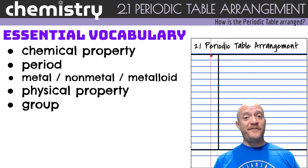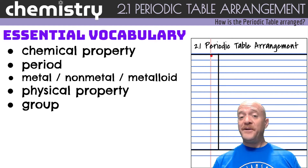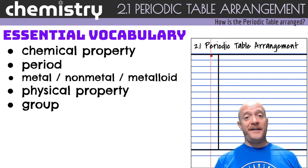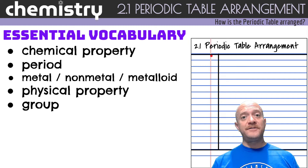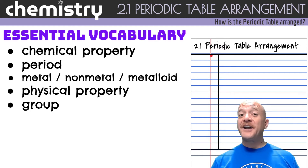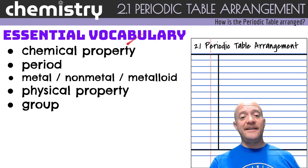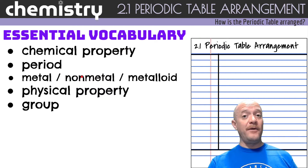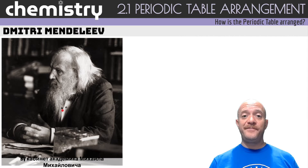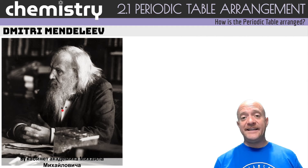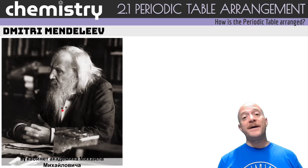This is the video for 2.1 Periodic Table Arrangement. Go ahead and set up a new entry in your Cornell notes — remember to start a new page for this video. Also check out the essential vocabulary. Today we'll be discussing: chemical property, period, metal, nonmetal, metalloid, physical property, and group.